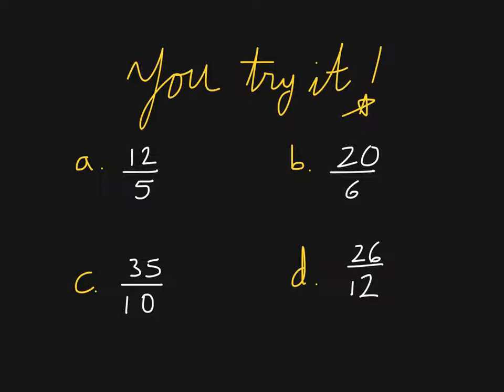Hopefully after you answered this one for 12/5, you would say I have 2 groups of 5/5, that would get me close to 12, that would take up 10 of those fifths and I would have 2/5 left over.